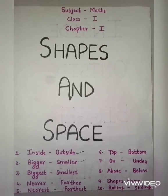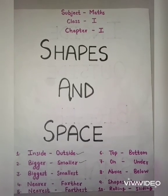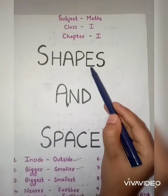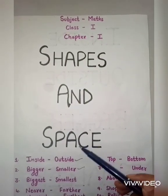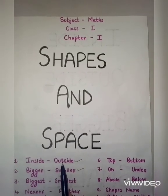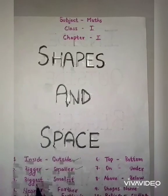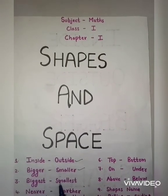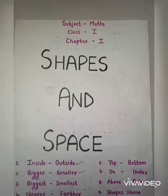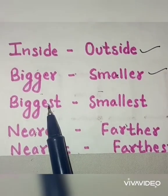Hello everyone, this is Naina Gaba and this is our second video of Class 1 Maths, Chapter 1: Shapes and Space. In our first video we covered the topics inside/outside and bigger/smaller. In today's video we will cover the topics biggest, smallest, nearer, and further. So let's begin. Biggest means sab se bada and smallest means sab se chota.